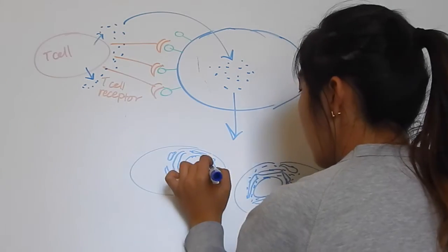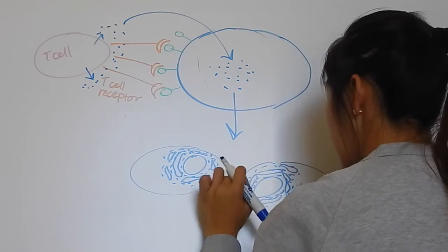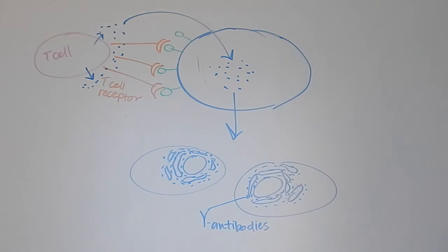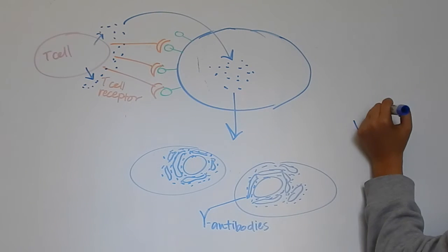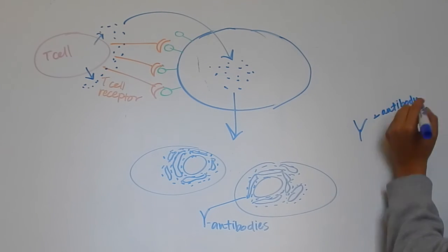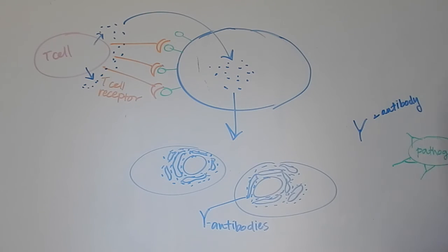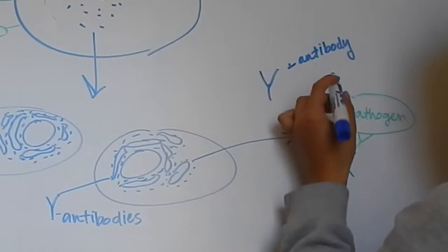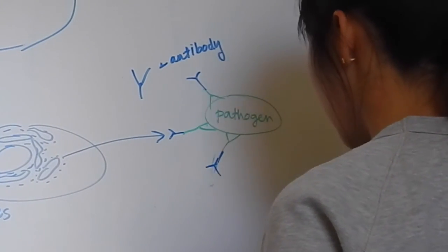These plasma cells are antibody factories, producing antibodies to be released into the bloodstream. These antibodies will then bind to the pathogens in the bloodstream.